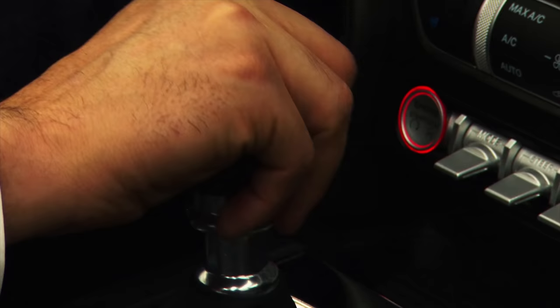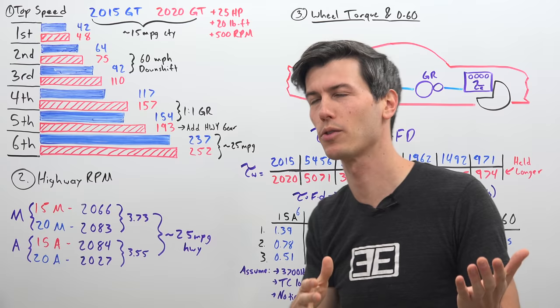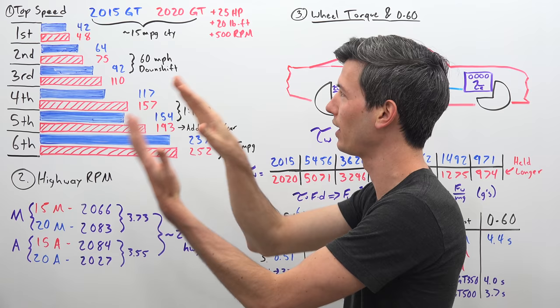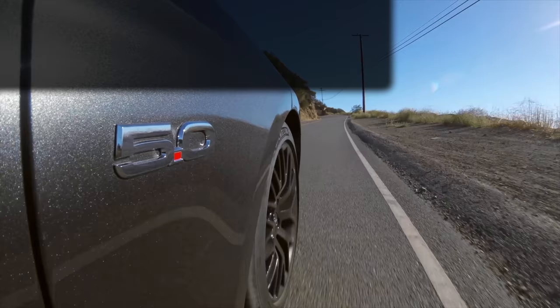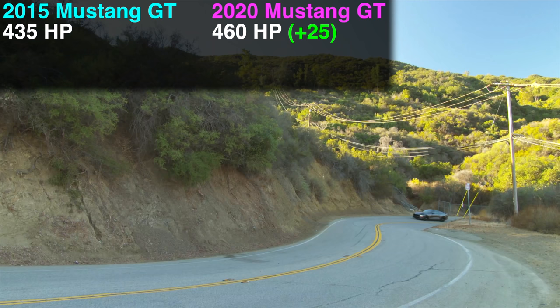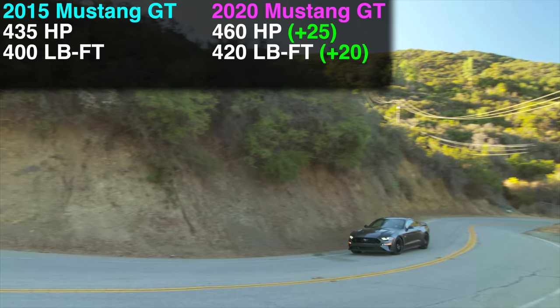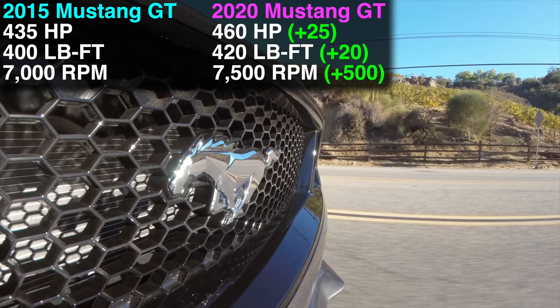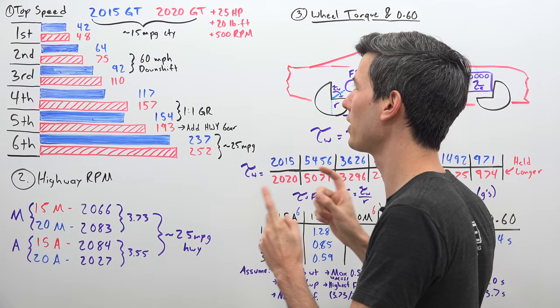So we're going to be comparing the 2015 Mustang GT with a manual transmission versus the 2020 Mustang GT with a manual transmission. Now, the big changeover actually happened for the 2018 model year. So 2015 through 2017 were pretty similar, 2018 through 2020 are pretty similar. And some of the big upgrades for the 2018 model year, you got 25 additional horsepower, so 460 horsepower. You got 20 pound-feet of additional torque, so 420 pound-feet of torque, and you got an extra 500 RPM added to that redline. So a 7500 RPM redline versus 7000 for the 2015 to 2017 Mustang GT. However, the unfortunate news is that they dramatically changed the gear ratios for the 2018 and thus 2020 model year transmission.